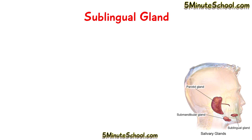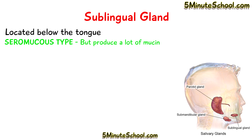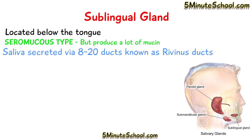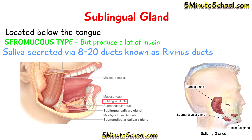The sublingual gland is located inferior to the tongue. The sublingual glands are generally classified as the seromucus type, however they do produce mostly mucin. Saliva exits from the sublingual glands through around 8 to 20 ducts known as the rivinus ducts.